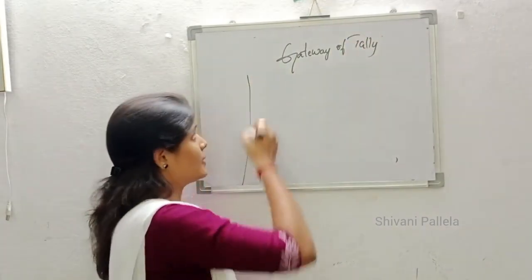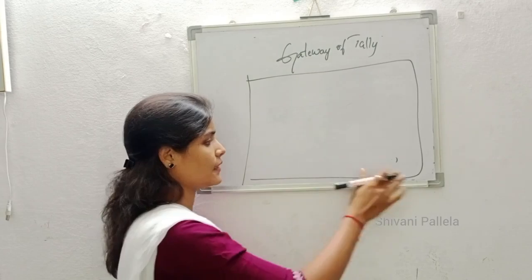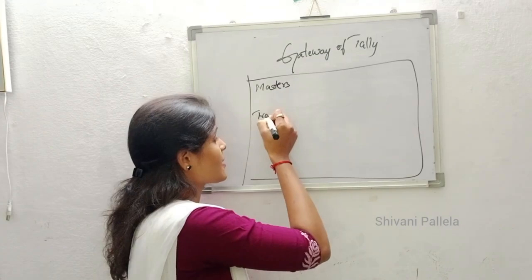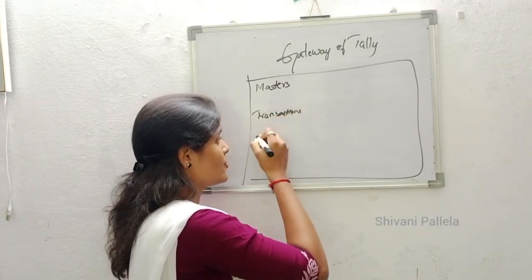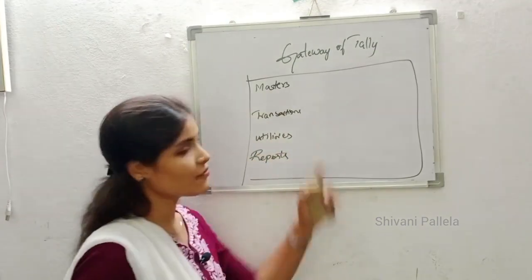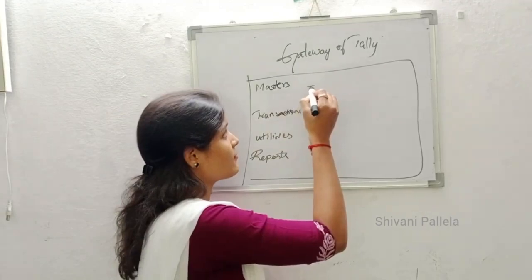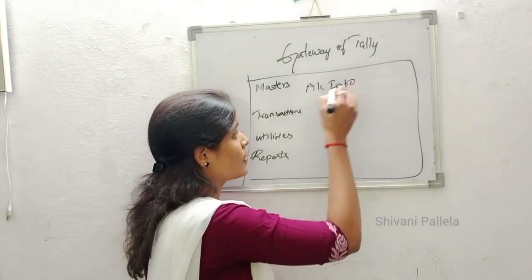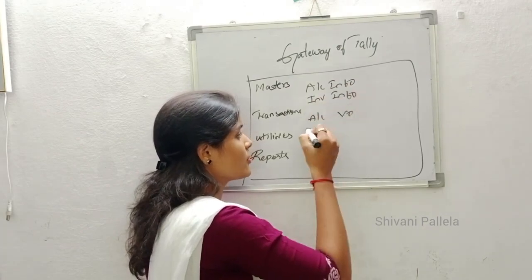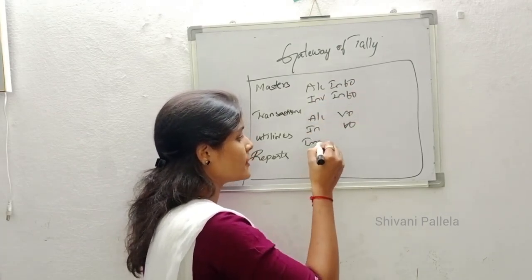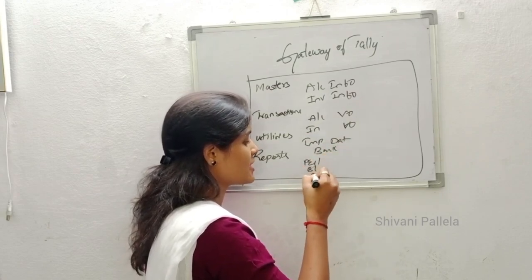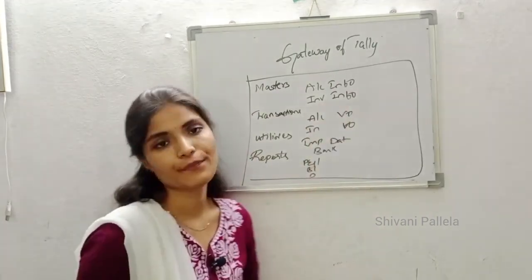The Gateway of Tally is a simple screen. You will have four side headings: Masters is the first, Transactions is the second, Utilities, and Reports. Under these headings you will have: Accounts Info, Inventory Info, Accounting Voucher, Inventory Voucher, Import Data, Banking, and under Reports you will have P&L Account, Balance Sheet, Display, and Stock.